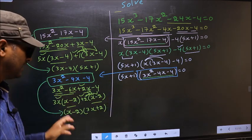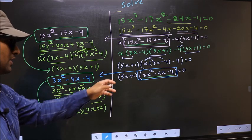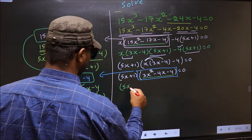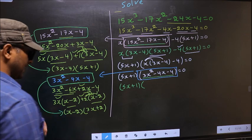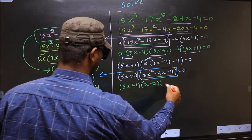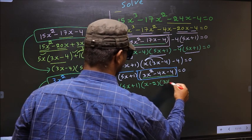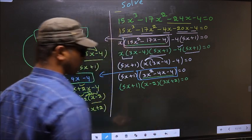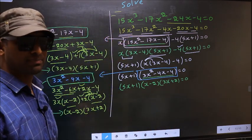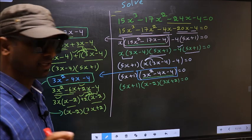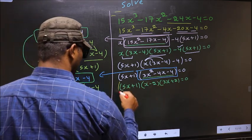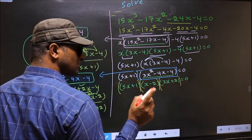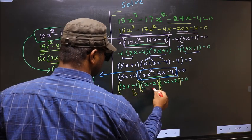So this equation will change to: (5x plus 1) times (x minus 2) times (3x plus 2) equal to 0. They told us to solve, which means we should get the values of x. Over here we got product of brackets equal to 0, so to get x values we should equate each bracket to 0.